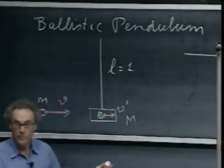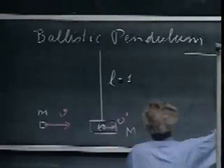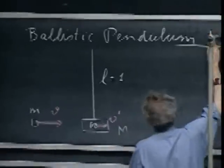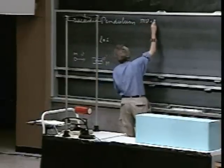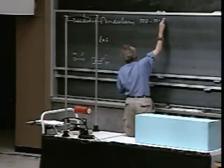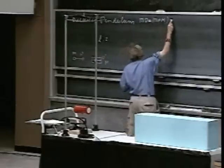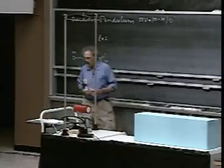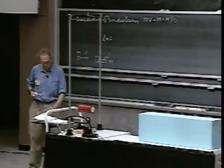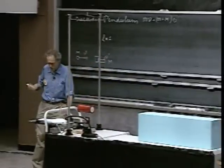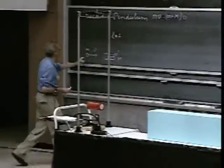Momentum is conserved, so we clearly have that m·v equals (m + M) times v prime. So if you could measure v prime, then you could measure the speed of the bullet, which is v.